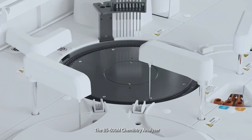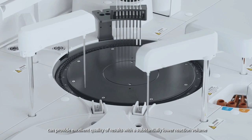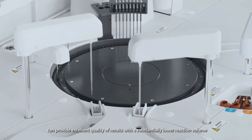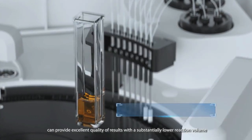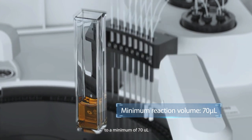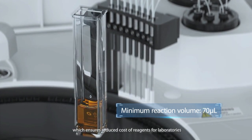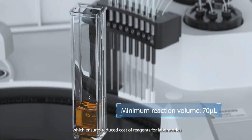The BS 600M chemistry analyzer can provide excellent quality of results with a substantially lower reaction volume to a minimum of 70 microliters, which ensures reduced costs of reagents for laboratories.